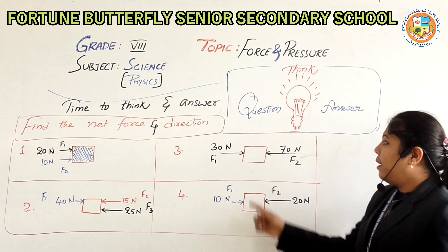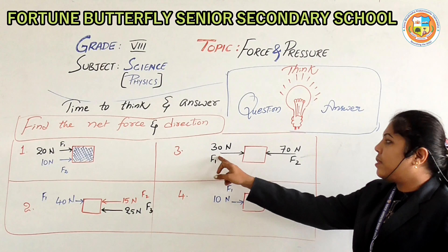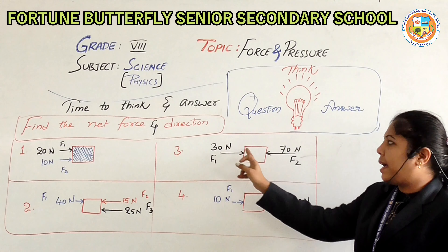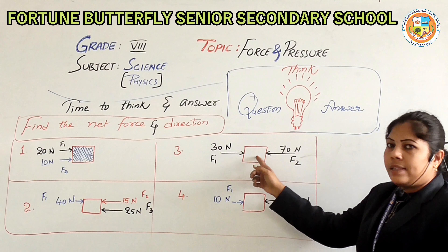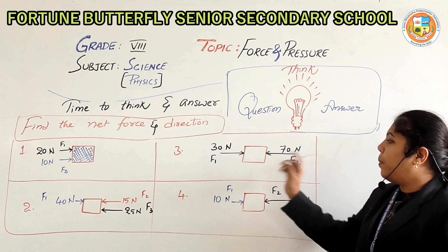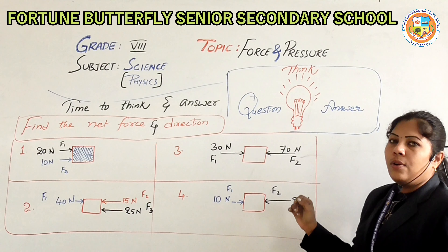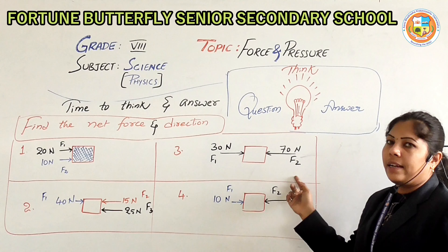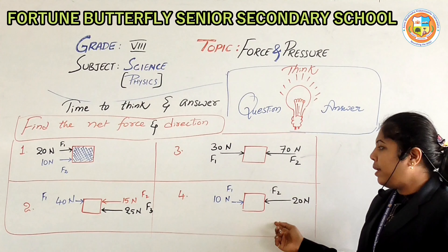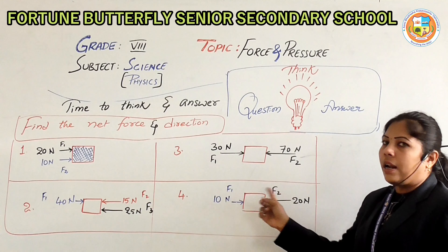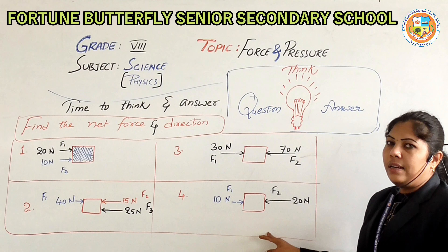Third question: an object of mass M has F1 of 30 newtons acting on it and F2 of 70 newtons acting in the opposite direction. Find the net force and the direction. Fourth question: two forces are acting in opposite directions — find the net force and the direction.